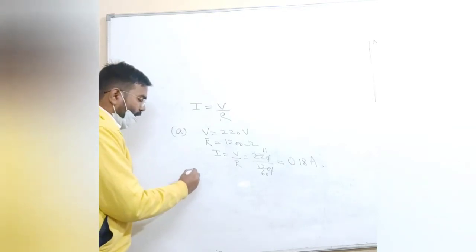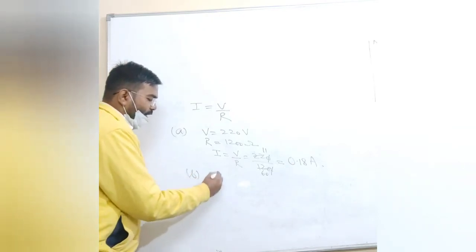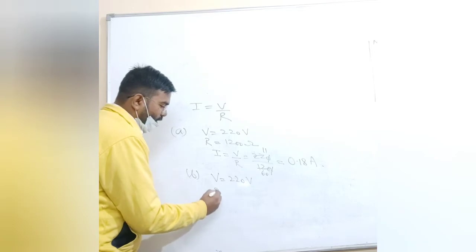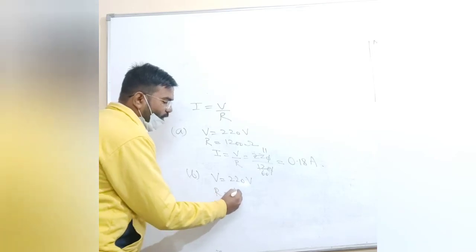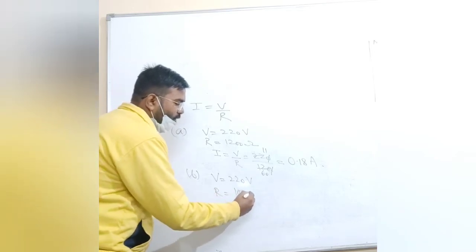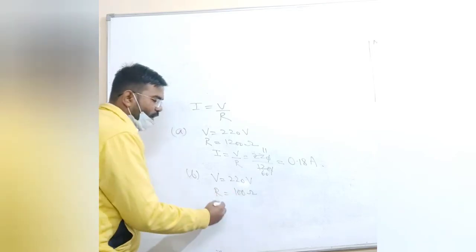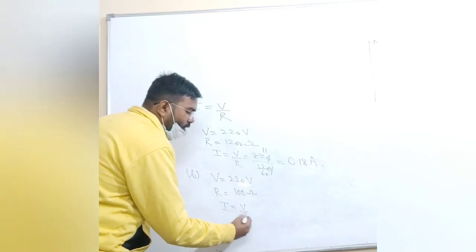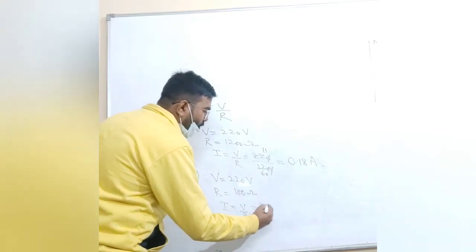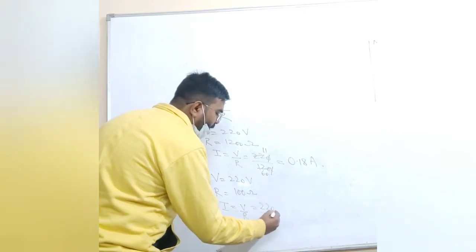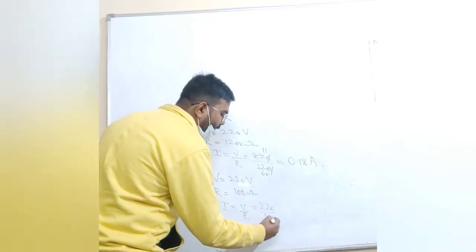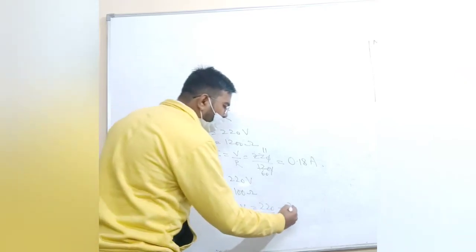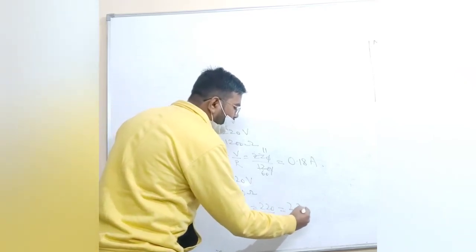For the heater, the potential is 220 volt. So I equals V by R, which is 220 upon 100, giving 2.2 ampere.